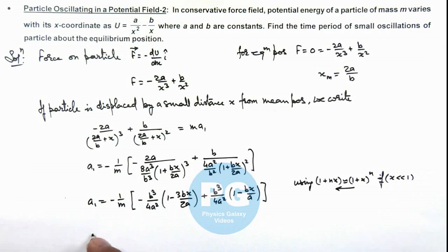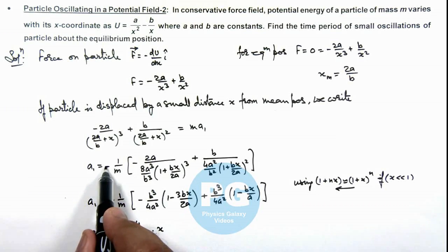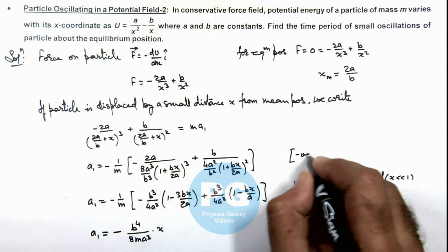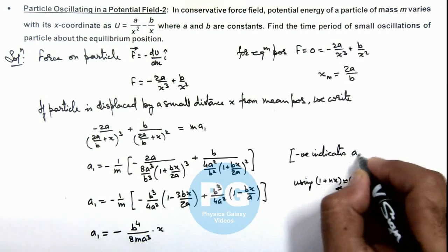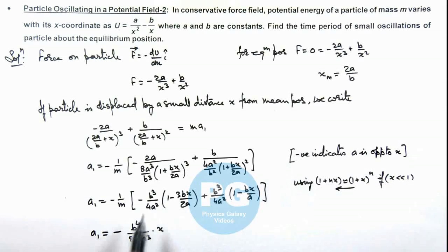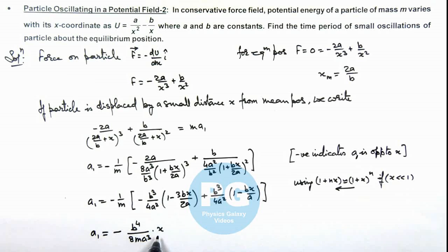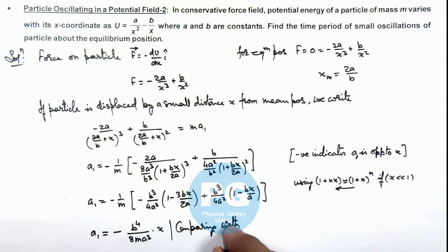I am leaving the simplification as an exercise for you. Finally what you'll get is minus b⁴/(8ma³) multiplied by x. So this is a proportional function of x. The negative sign indicates that acceleration a₁ is opposite to displacement x. We can now compare this with the differential equation of SHM, which gives acceleration as minus ω²x.